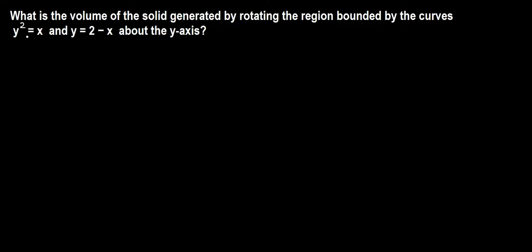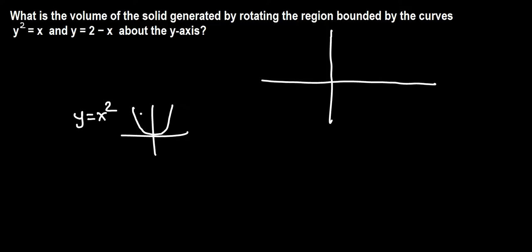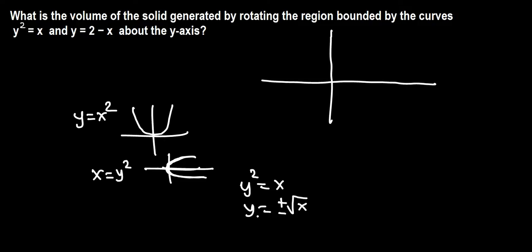First we need to graph these curves. y squared equals x — we know how to graph y equals x squared, that's a parabola, but this is x equals y squared, which will be a sideways parabola. You can also solve y squared equals x for y: y equals positive or negative root x, so you graph both y equals root x and y equals negative root x to get this parabola. And y equals 2 minus x you can use your calculator.